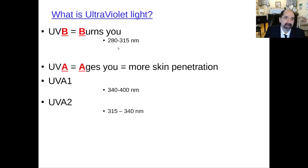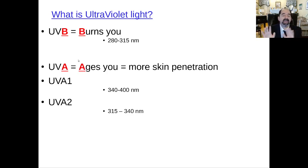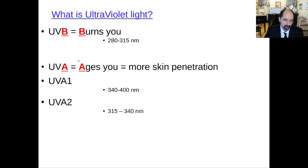The types of ultraviolet light, in a simplistic way: UVB — B for burns you — causes a sunburn. UVA — A for ages you — has more skin penetration and is more likely to promote wrinkles over time.